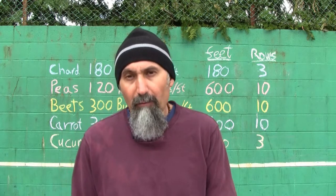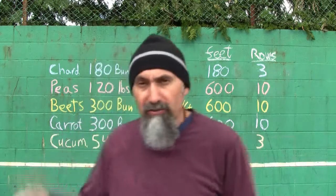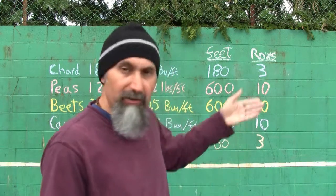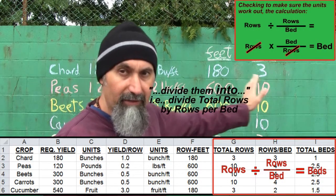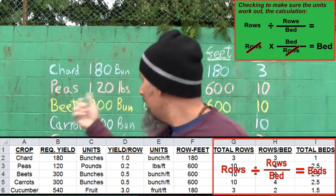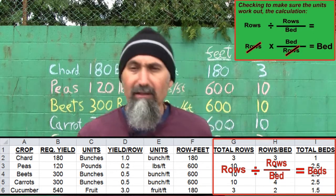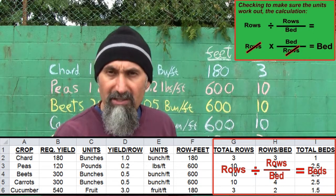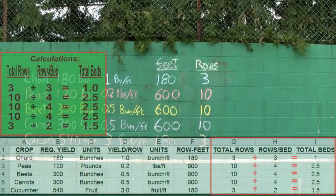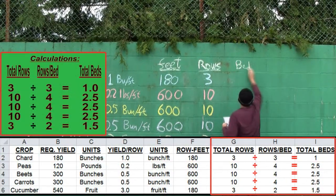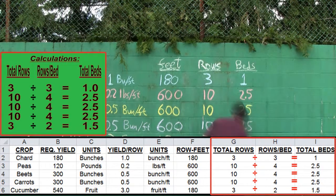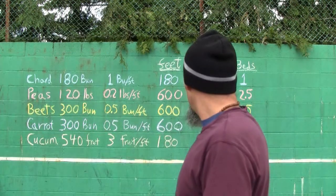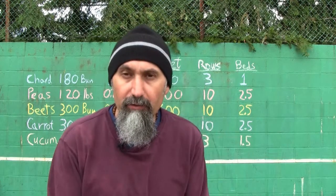To figure out how many beds each item uses, we take the total number of rows and divide by the rows per bed. That tells us how many beds of each crop we're planting — essentially our section. The total beds per crop breaks down to: one bed of chard, 2.5 beds of peas, 2.5 beds of beets, 2.5 beds of carrots, and 1.5 beds of cucumber.